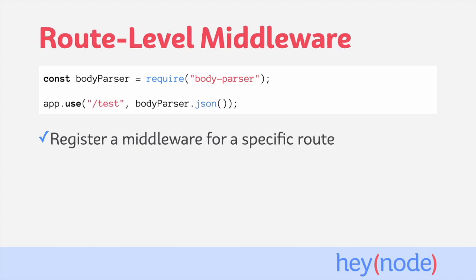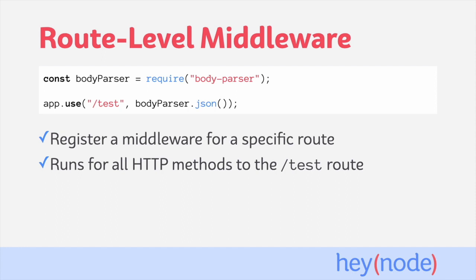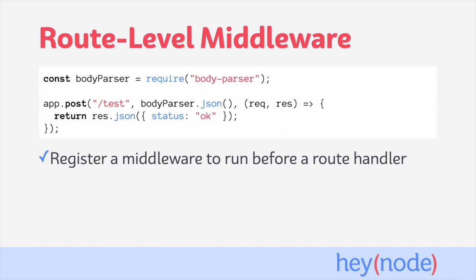You can also register a middleware to run for a specific route by passing a path string to app.use. In this code snippet, we've registered BodyParser to run for requests sent to the route /test. It will run for requests using any HTTP method, like GET, POST, DELETE, etc. Finally, you can register a middleware to run for a specific route handler by passing it as an argument before the actual handler function itself. This example will run the BodyParser middleware for POST requests sent to the path /test before the response handler function runs.